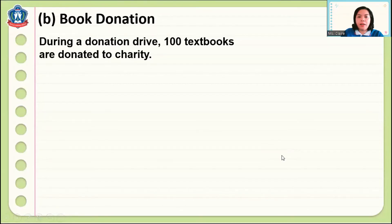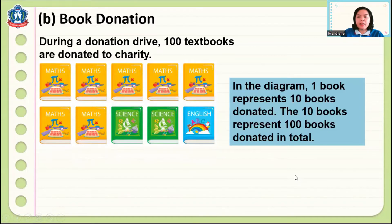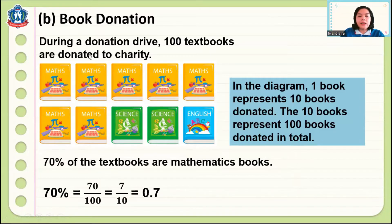During a donation drive, 100 textbooks are donated to a charity. In this diagram, one book represents 10 books donated, so the 10 books represent 100 books donated in total. 70 percent of these books are mathematics books. 70 percent changed to a fraction is equal to 70 out of 100. If we reduce to the simplest fraction, that is seven tenths, or 0.7 in decimals.